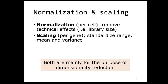A few words about normalization and scaling. Normalization is per cell — you remove technical effects per cell, usually based on library size: how many UMIs were counted for that particular cell — so you can compare cells to each other. Scaling is per gene — you standardize the mean and variance, which is important for principal component analysis. Both normalization and scaling are mainly for the purpose of dimensionality reduction. For differential gene expression analysis, normalization and scaling are typically handled by the algorithm calculating the p-values and log fold changes.